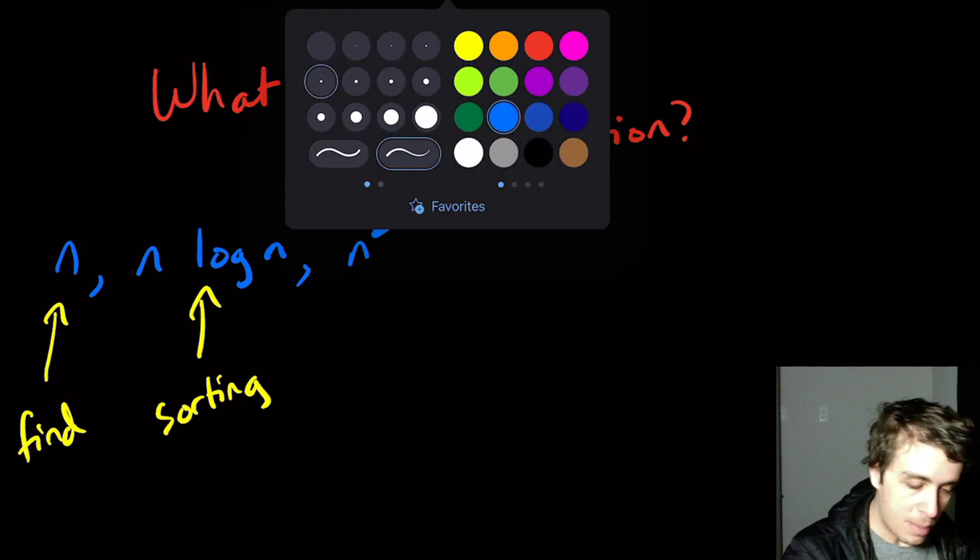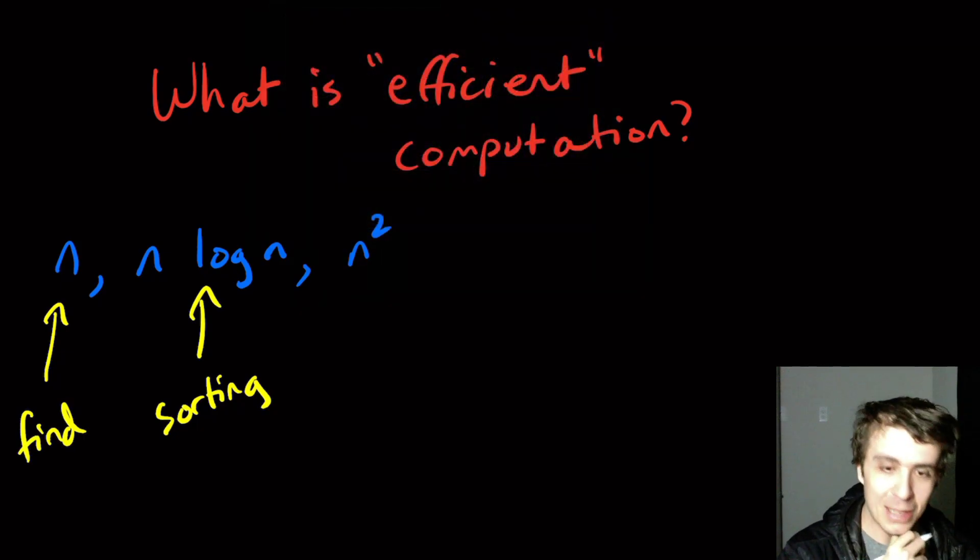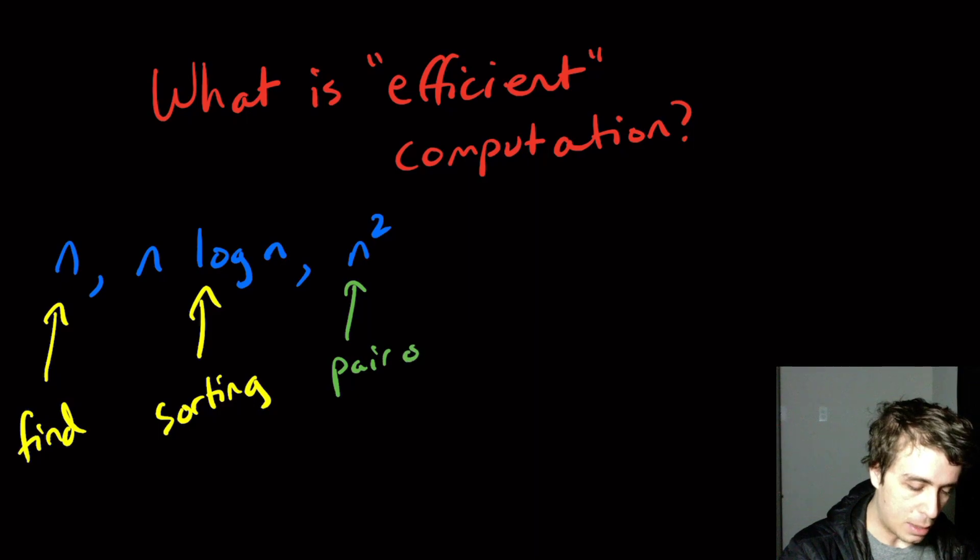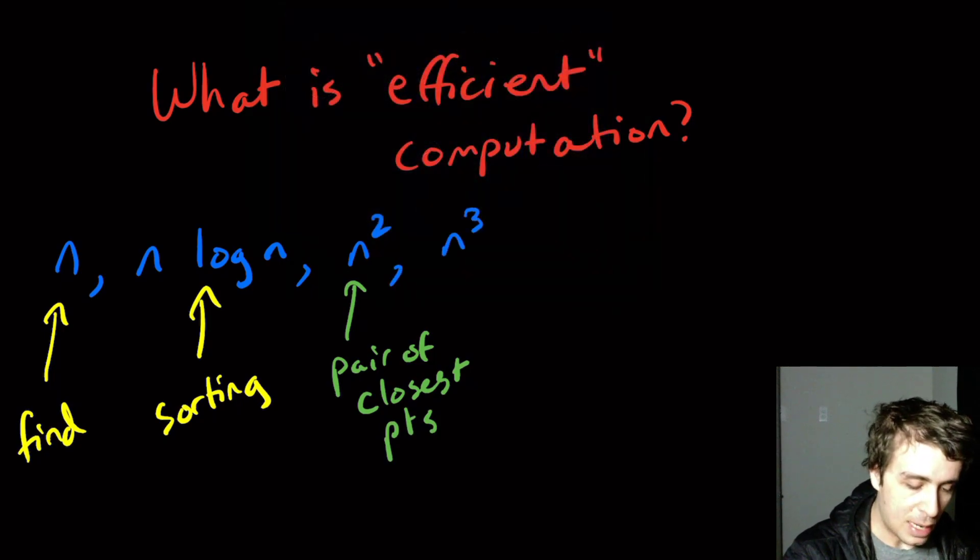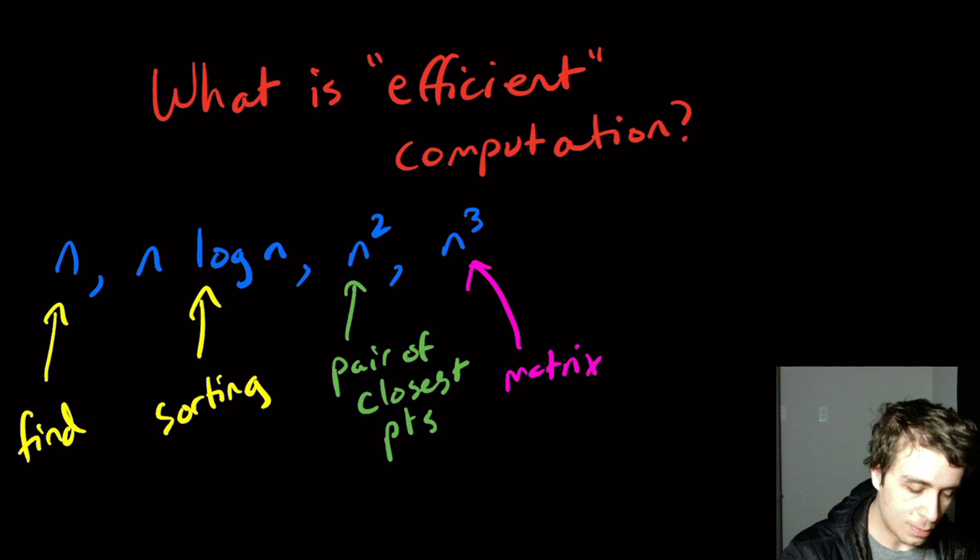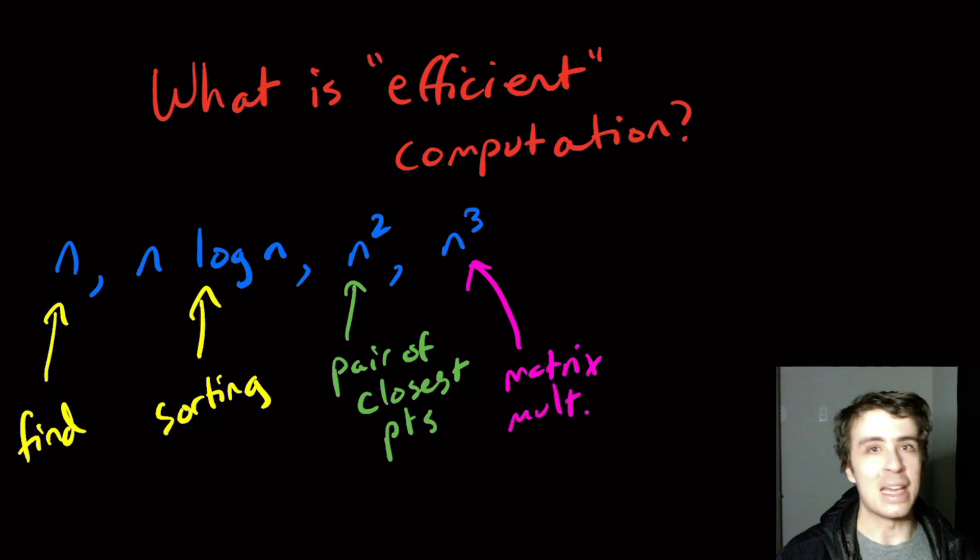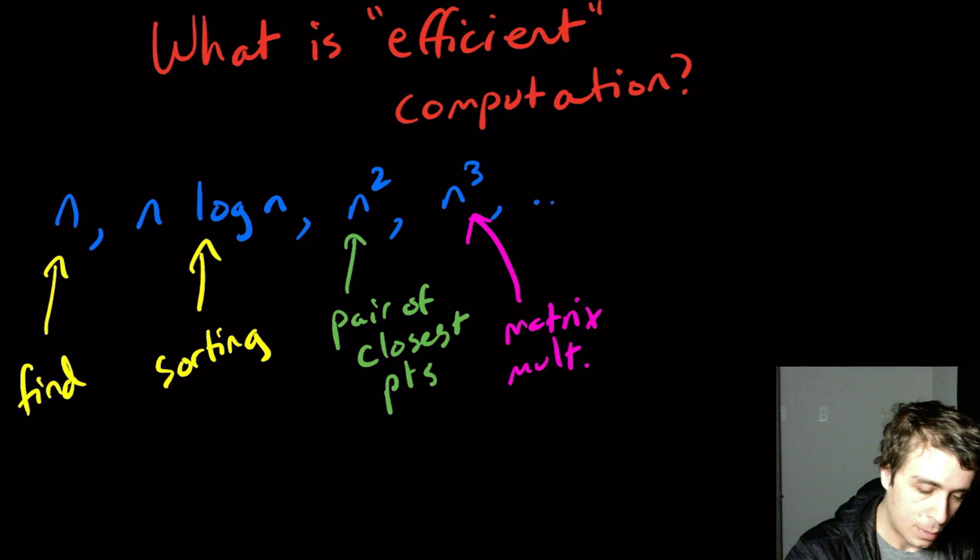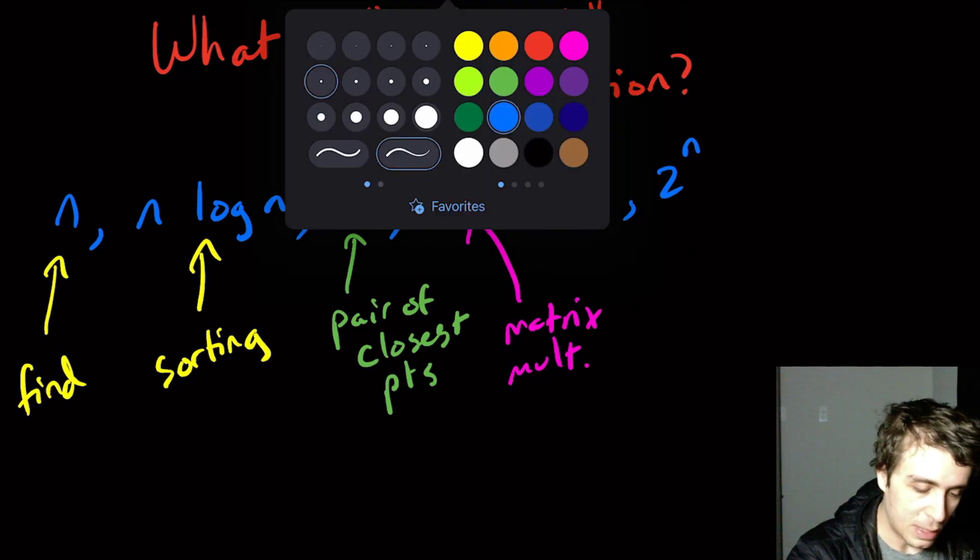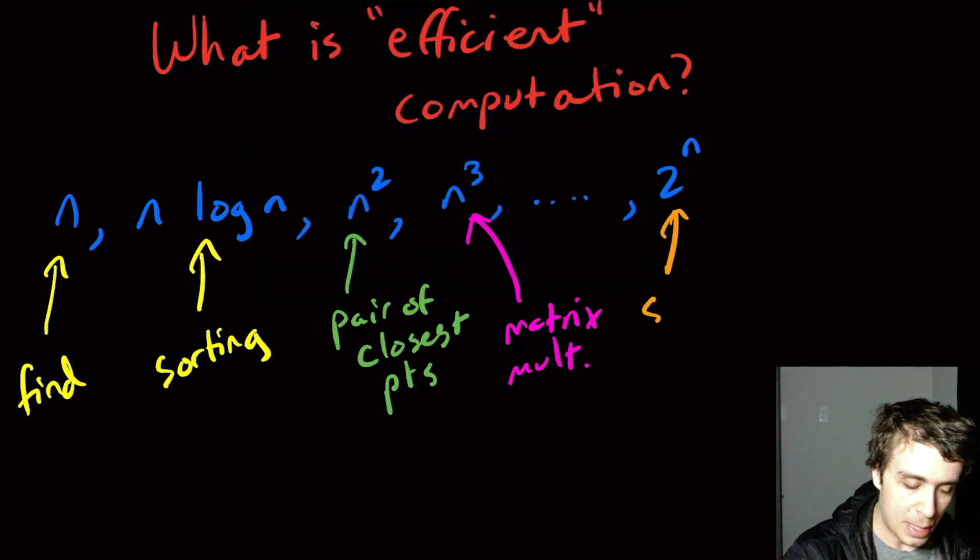n squared we may see in not as good sorting algorithms or maybe finding the pair of closest points. You can actually do it faster than that, but it's the naive way. n cubed sometimes shows up in matrix multiplication, which is ungodly important in computer science. We sometimes have exponential runtimes which show up in SAT solving.